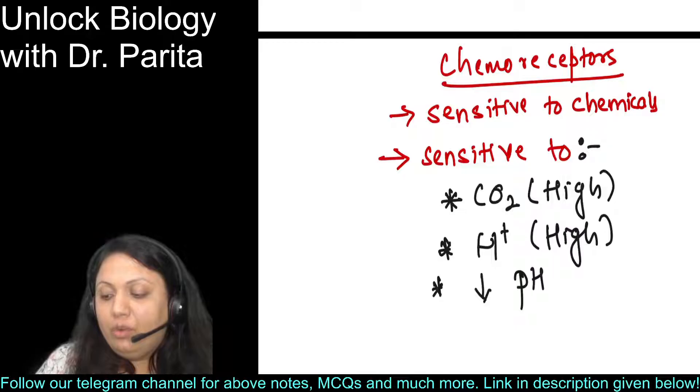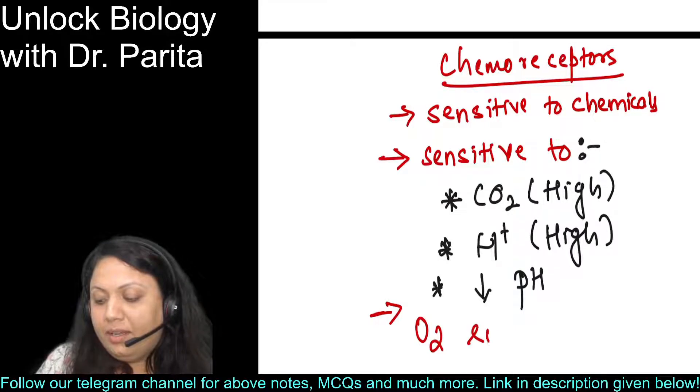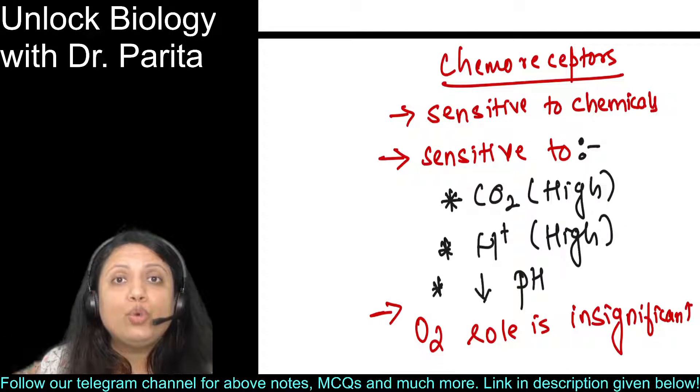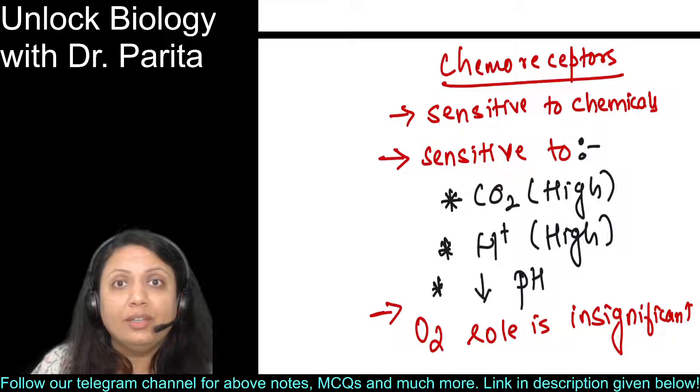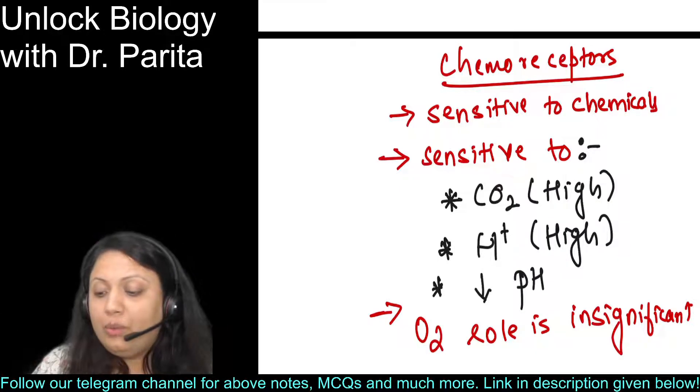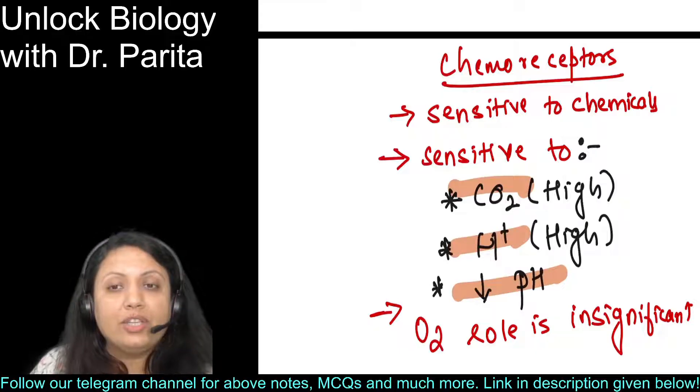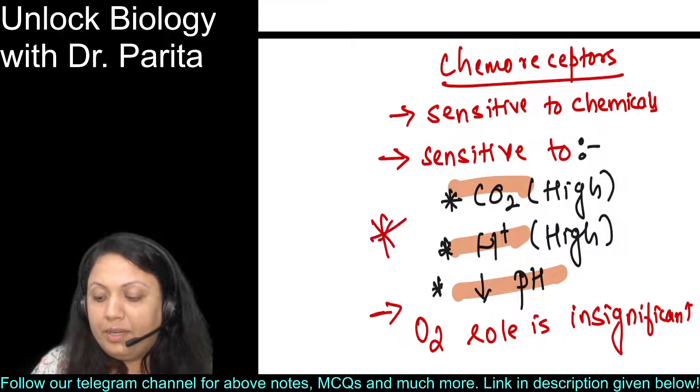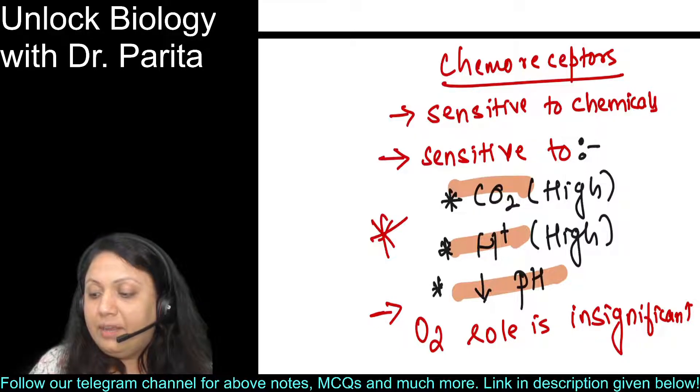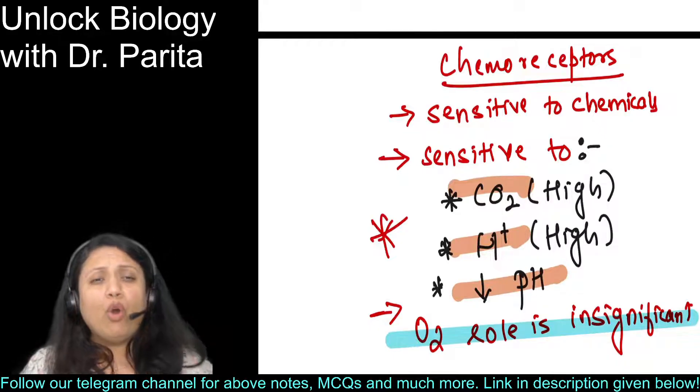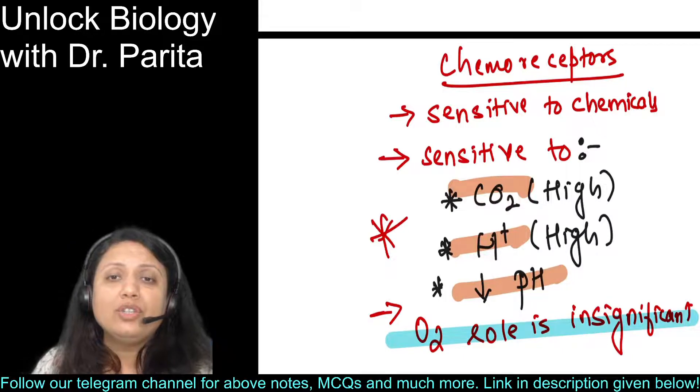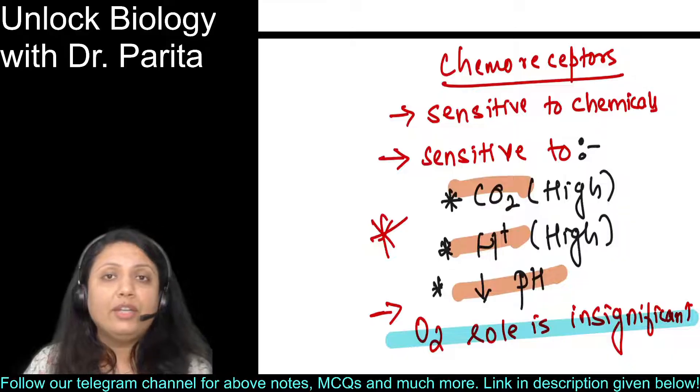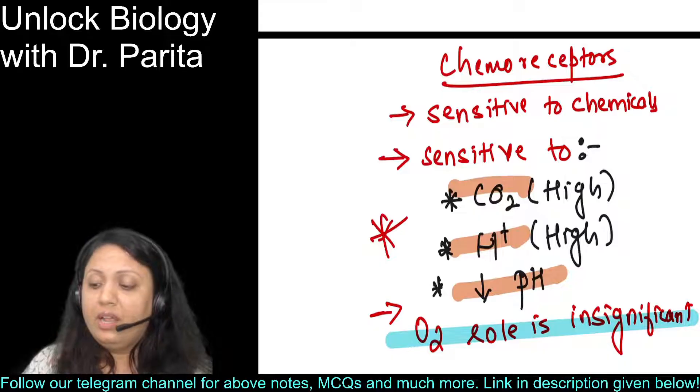Does oxygen have any role? Oxygen's role is insignificant. Obviously, high CO2 and high H+ is an indication that body oxygen is low, but they are not sensing oxygen - they are sensing CO2, H+, and low pH. This is very important and becomes a very important MCQ. When oxygen falls to a critical level, then it will sense; otherwise, the main sensation is to CO2, H+, and low pH.